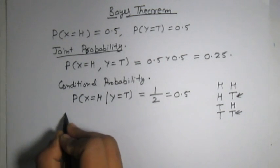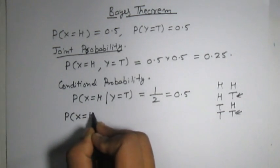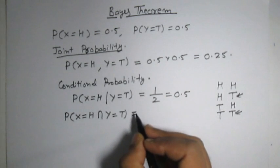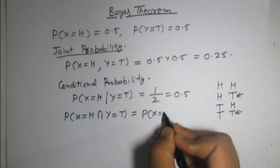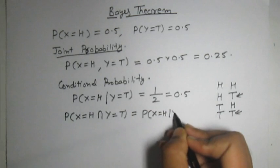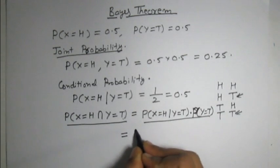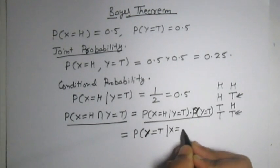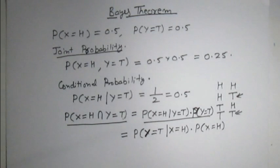We can also write the probability in terms of intersection. The probability of the first event being head intersected with the second event being tail can be represented in terms of conditional probability as P(X=H | Y=T) times P(Y=T). This is also equal to P(Y=T | X=H) times P(X=H). Equating these two expressions, we have P(X=H | Y=T) times P(Y=T) equals P(Y=T | X=H) times P(X=H).